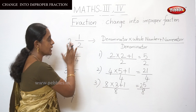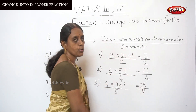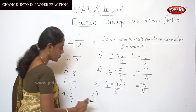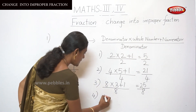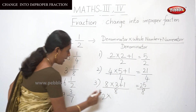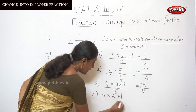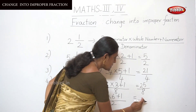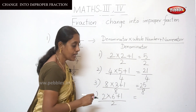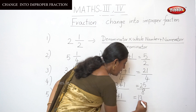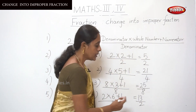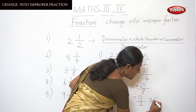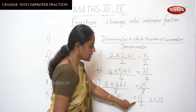This is the formula to change a mixed fraction into an improper fraction. One more sum for you children — the fourth sum: 6 and 1 by 2. Put the denominator 2, into the whole number 6, plus the numerator 1, divided by the denominator 2. The answer: 2 × 6 = 12, and 12 + 1 = 13, so the answer is 13 by 2. This is also an improper fraction because the denominator is smaller than the numerator.